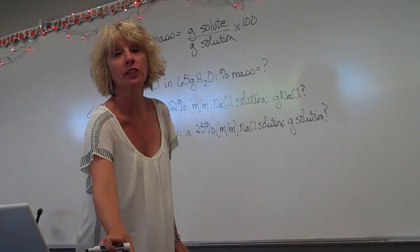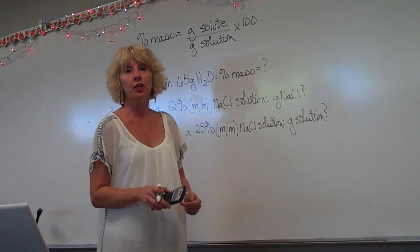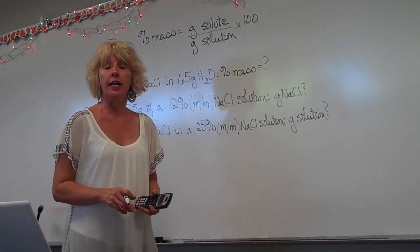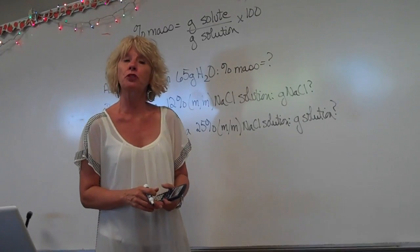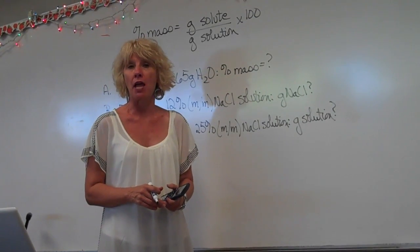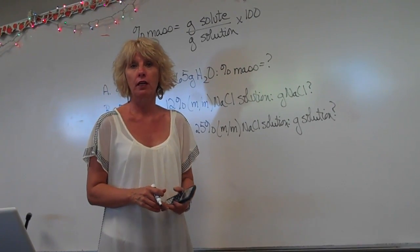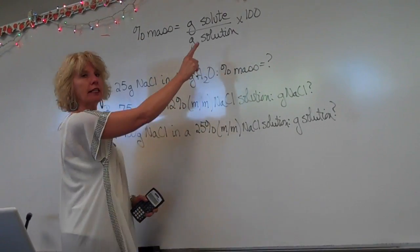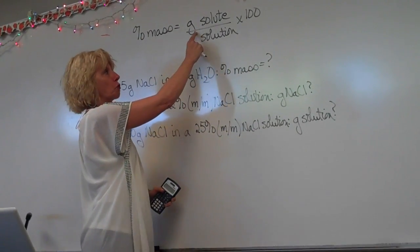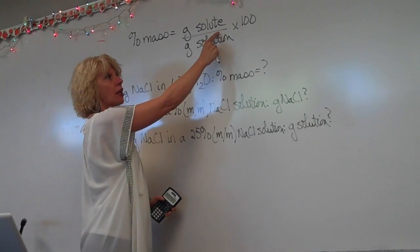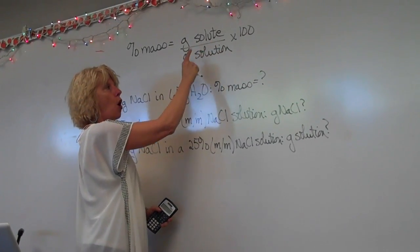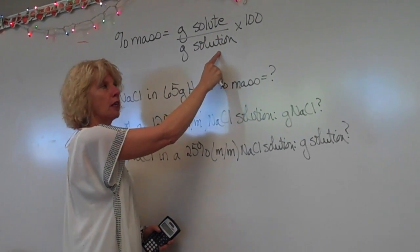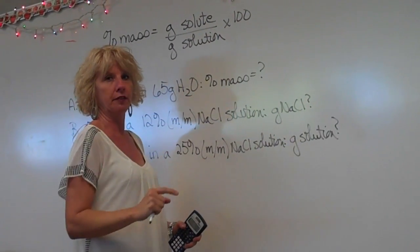The first kind of concentration you're going to have to calculate is called percent by mass. Percent by mass is equal to grams of solute over grams of solution times 100.